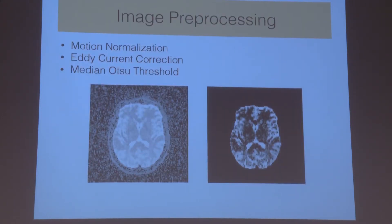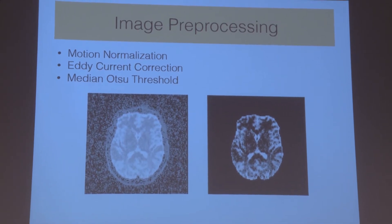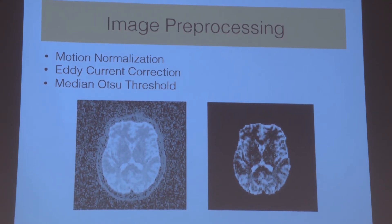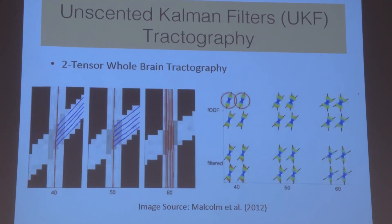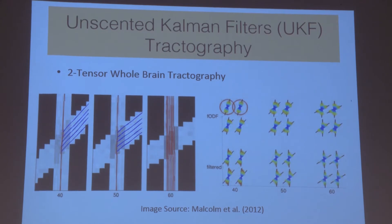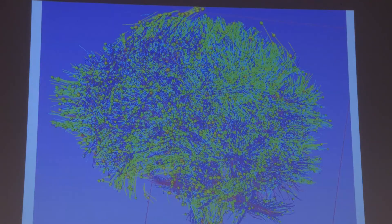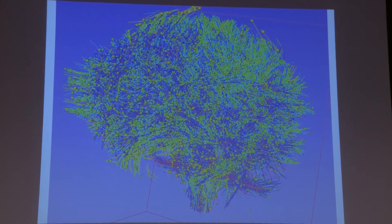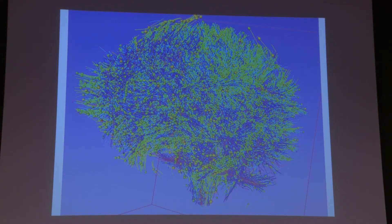The image preprocessing stage required normalization for motion, correction of eddy currents, and immediate OZU thresholding to remove background noise and produce a final brain mask for processing. We then used an unscented Kalman filter to conduct whole-brain tractography, using tensor ellipsoids with previous directionality information in a recursive, stepwise process to track the inherent streamlines across the whole brain. This generates a whole tractography image that includes millions of streamlines and their inherent diffusion measures at each and every point.